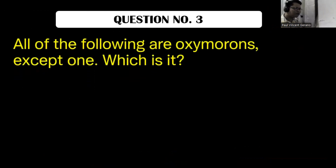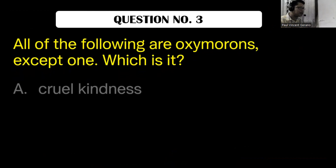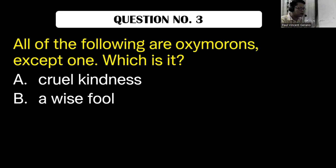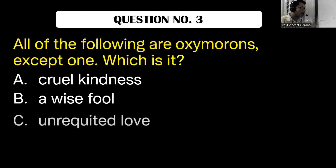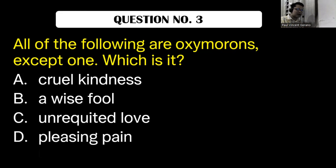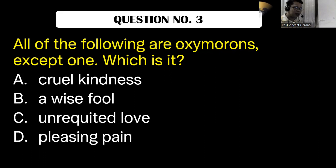Now let's go to question number three. All of the following are oxymorons except one. Which is it? A, cruel kindness. B, a wise fool. C, unrequited love. D, pleasing pain.